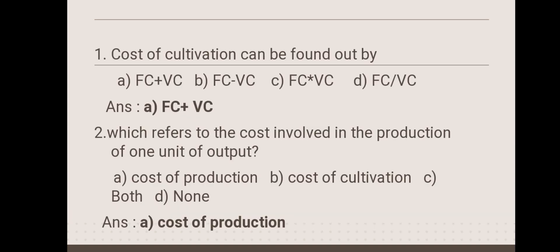Now let us move on to the MCQs. First: cost of cultivation can be found out by — option A: FC plus VC, option B: FC minus VC, option C: FC into VC, option D: FC by VC. The answer is FC plus VC. Cost of cultivation is the sum total of fixed cost and variable cost.